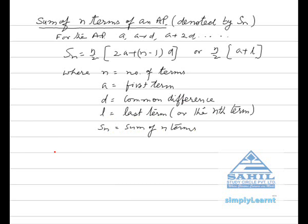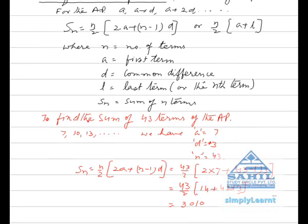To find the sum of 43 terms of the AP 7, 10, 13, and so on: we have A = 7, D = +3, N = 43. Using the first formula, since we are given N, A, and D, we find Sn = 43/2 × (2 × 7 + (43−1) × 3), which simplifies to 3010.